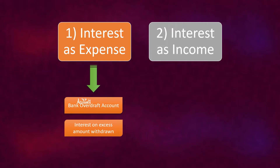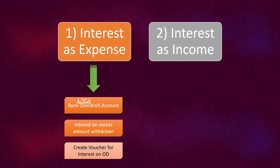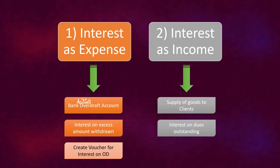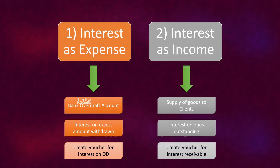Let's say you operate a bank overdraft account — you would be paying interest on your withdrawals. We'll see how to create a voucher for interest on overdraft. For interest as income, let's say you are into supply of goods and you charge interest from your clients on their outstanding dues if payment is not made within the time limit. Let's see how to create a voucher for the interest that you have to receive. But first, let's enable this feature in Tally.